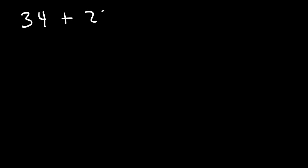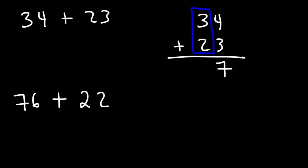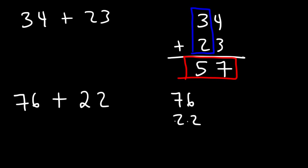So go ahead and try these examples: 34 plus 23, and 76 plus 22. For 34 plus 23, first we add 4 plus 3, which is 7, then 3 plus 2, which is 5. So 34 plus 23 is 57. For 76 plus 22, we add 6 plus 2, which is 8, then 7 plus 2, which is 9. So the answer is 98.